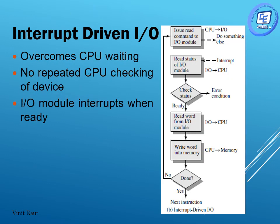Another technique is interrupt driven IO, which gives slightly better performance than programmed IO. In interrupt driven IO, it overcomes the CPU waiting that happens in programmed IO. No repeated CPU checking of the device is done. We will see the flowchart. First, the CPU issues a read command to the IO module and then does something else — some other work — then it reads the status of the IO module.